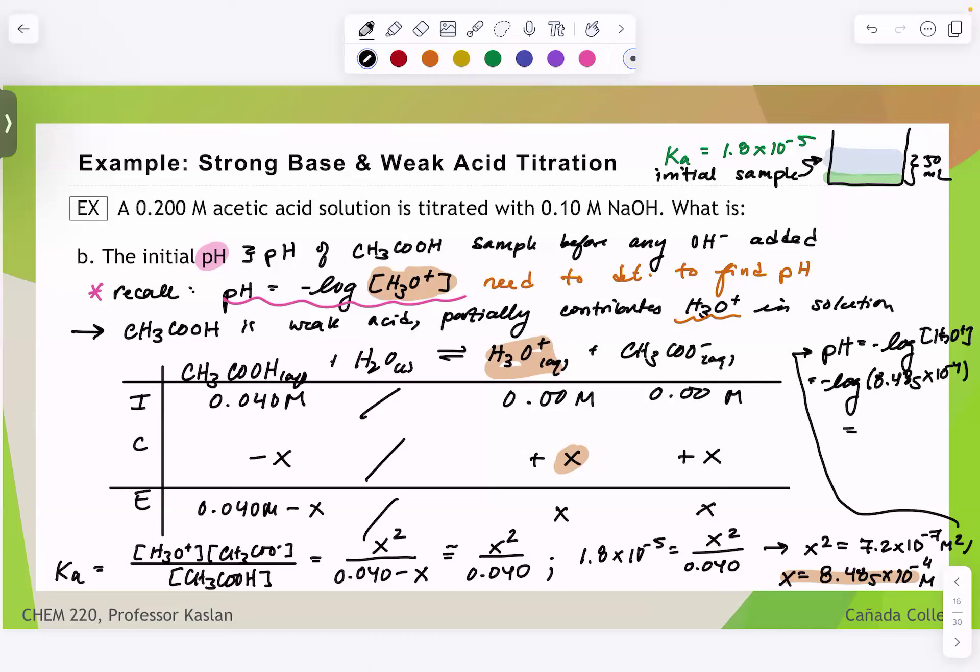All right. So I've got negative log 8.485 times 10 to the negative 4. I get a pH of 3.07. So three sig figs about rounding. And we can ask ourselves if this makes sense. So a pH of three, that is certainly one that is an acidic pH, right? pHs that are less than neutral, less than seven, are considered acidic. And since we are looking at the initial pH of the acetic acid solution, which is dissociating into H3O plus and the conjugate, we do expect for this to be an acid solution. It should have a low pH. So yay. We are sane. We can do math. Hooray.